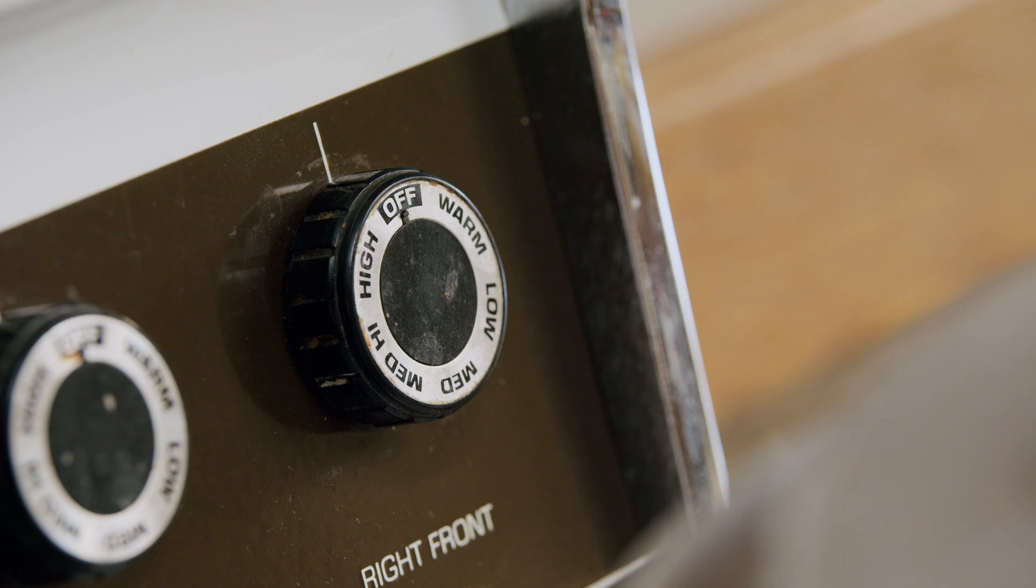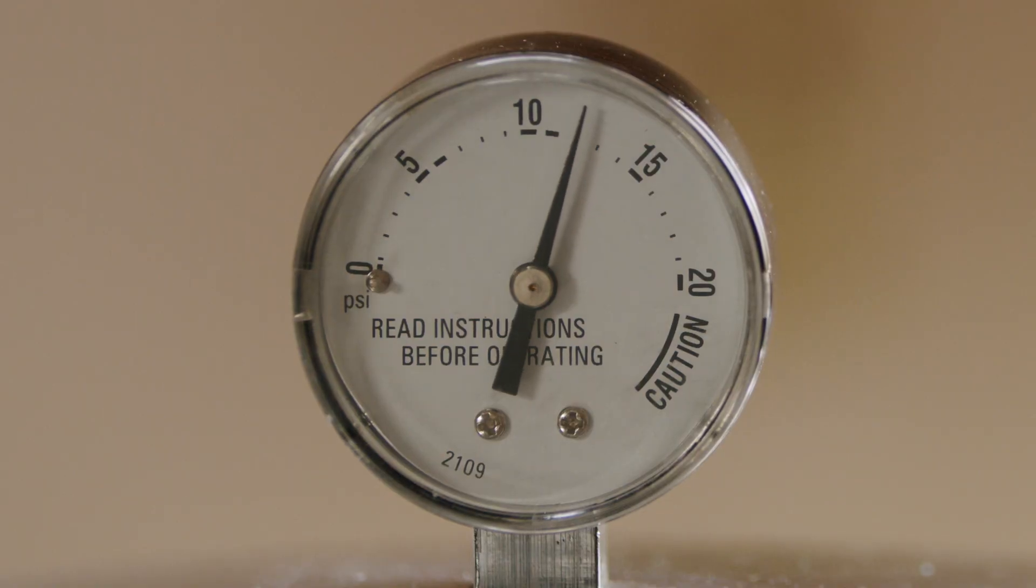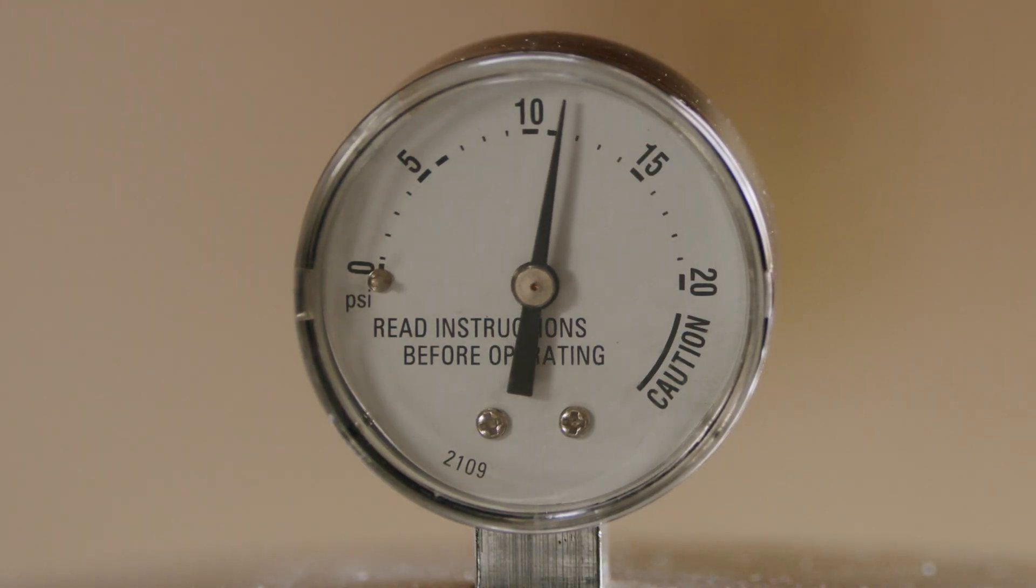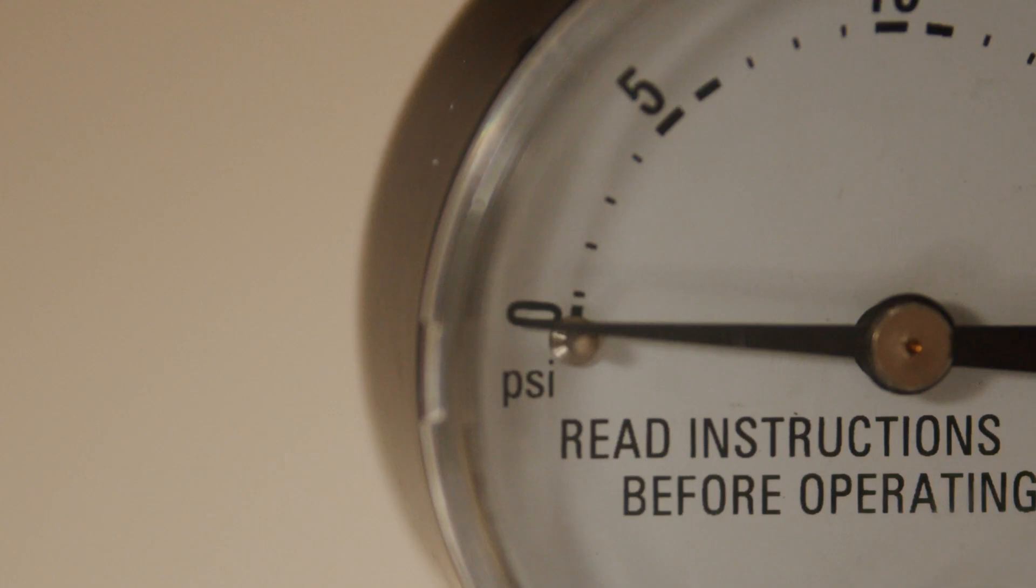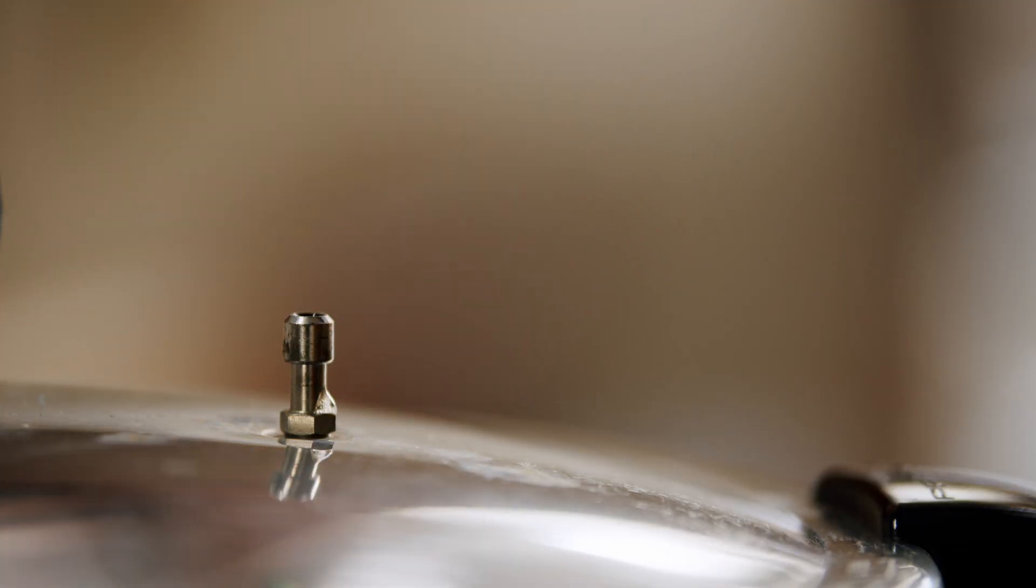Once the timer goes off, turn off heat to the canner. Pressure canners take time to depressurize after processing and before the lid can be opened. Wait until the needle drops to zero. After the canner is depressurized, remove the weight from the vent port.